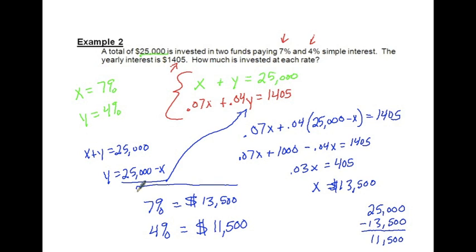If I do the 25,000 minus the 13,500, I get my total of 11,500 for the 4%. So right there shows you how much in each account you need to put in order to get that much interest.